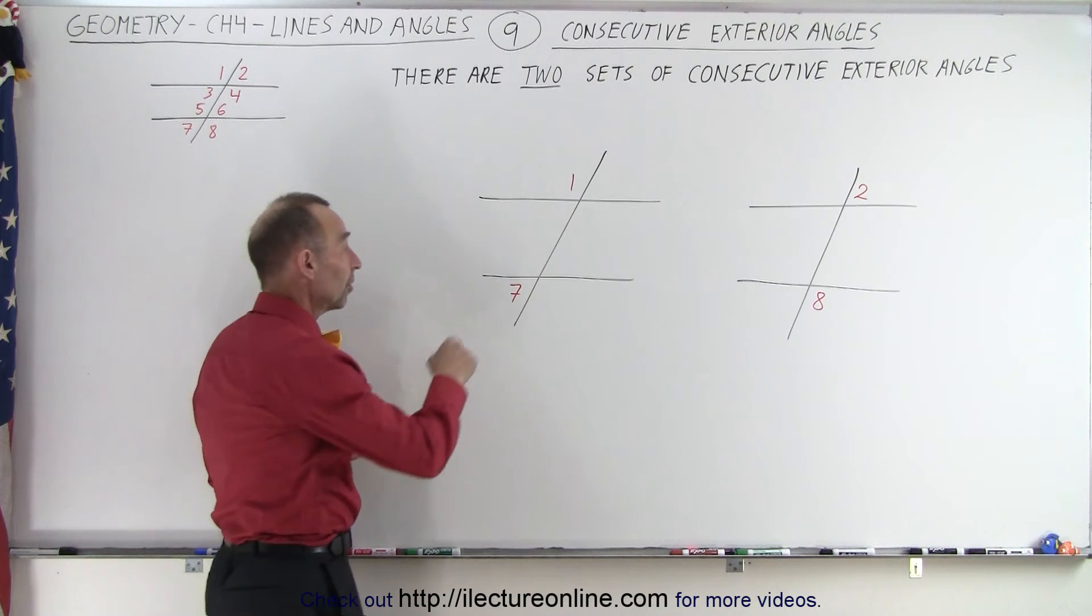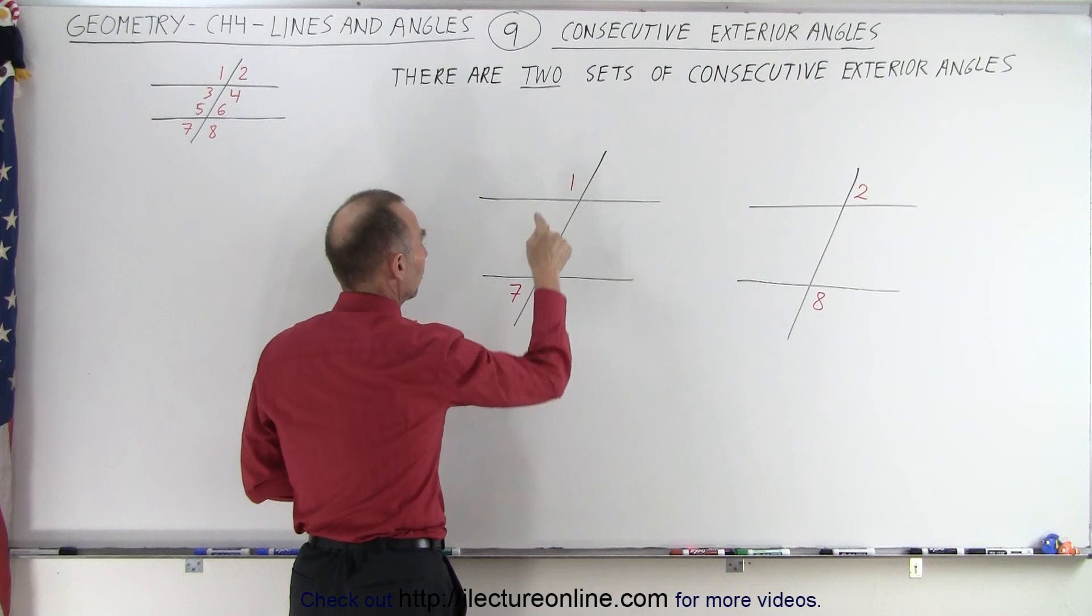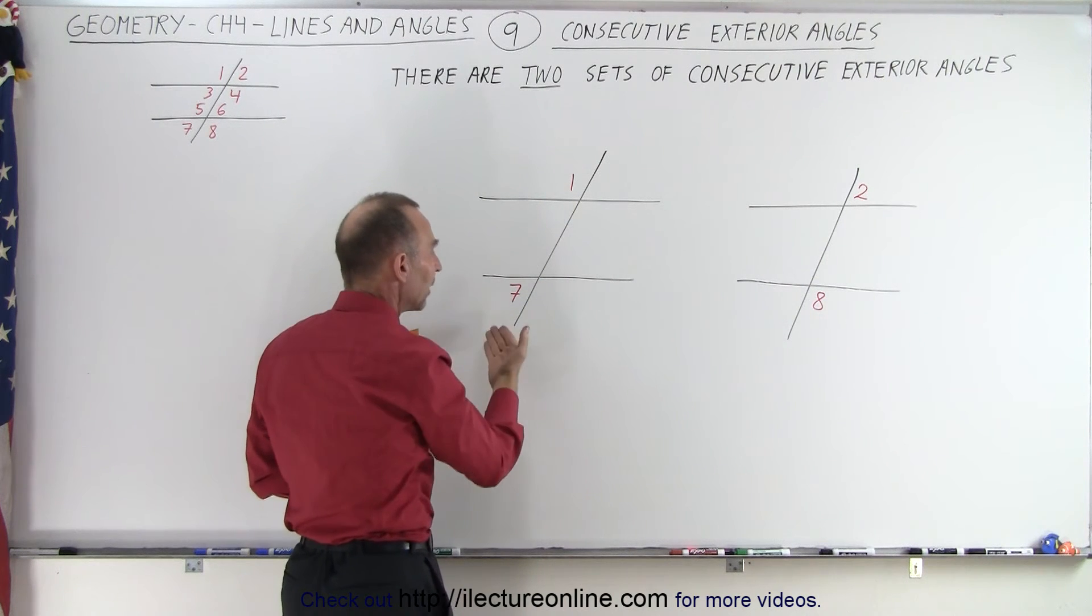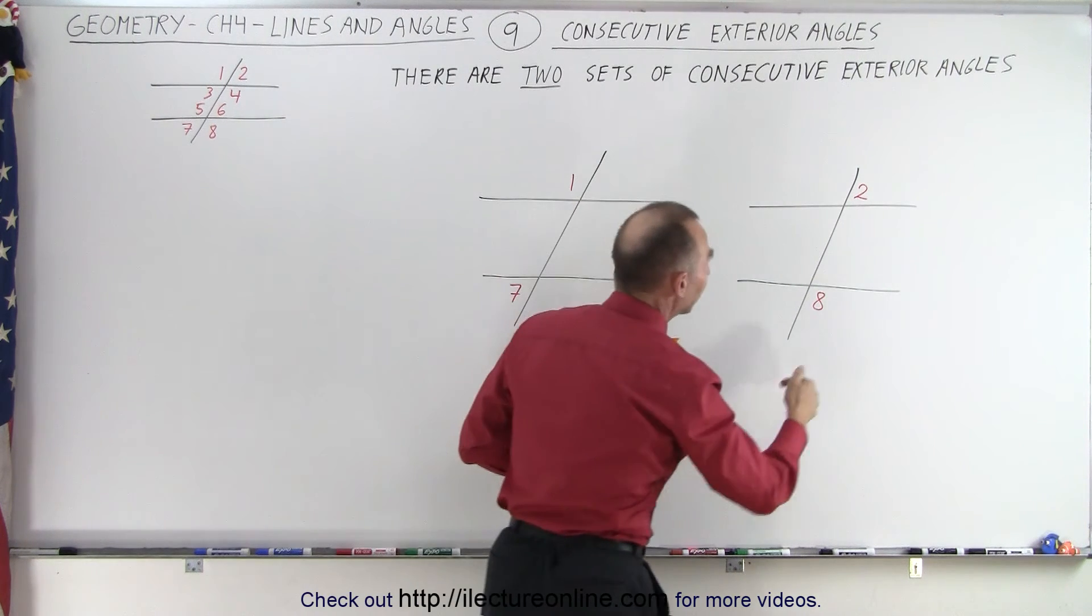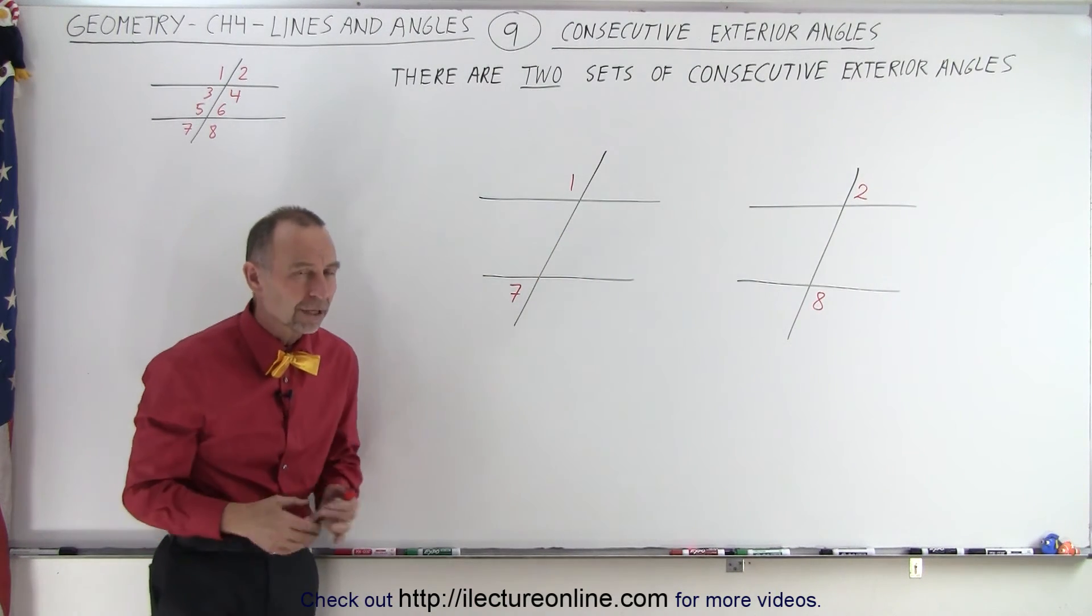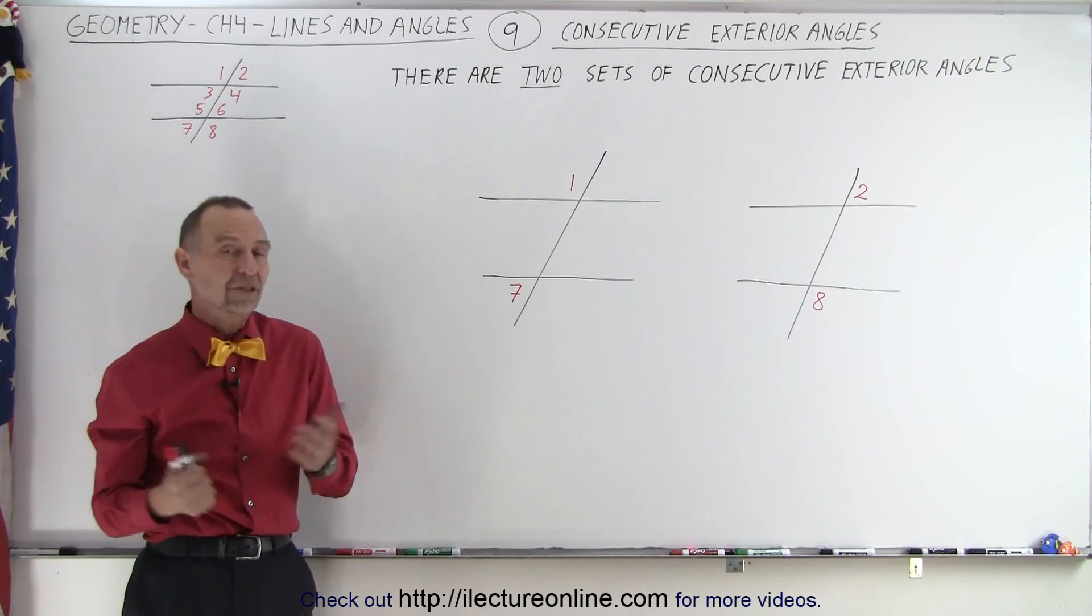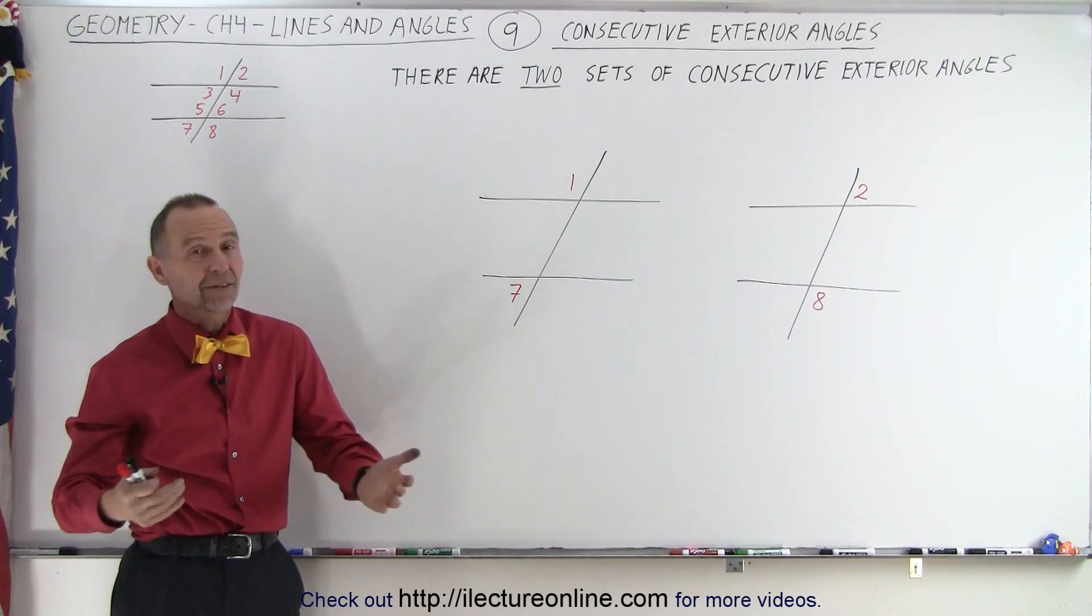And note that they are supplementary to one another. In other words, the angle measure of one plus the angle measure of seven will add up to 180 degrees, just like the angle measure of two and the angle measure of eight will also add up to 180 degrees. So that's a special thing about consecutive exterior angles as well, and that's how it's done.